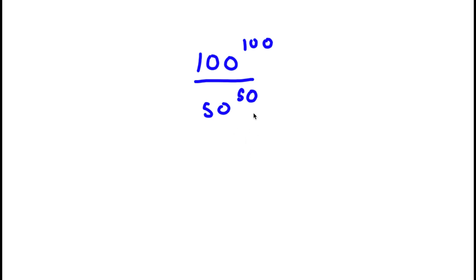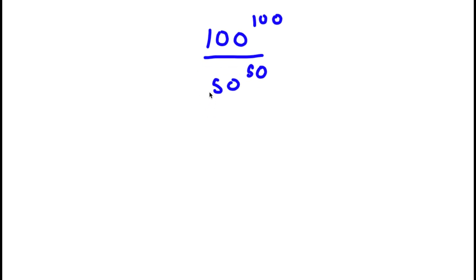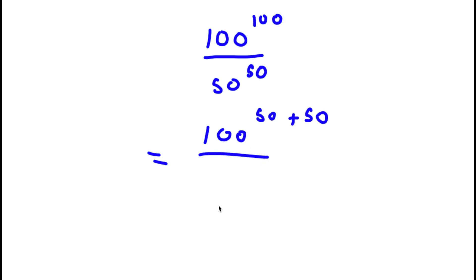In this problem, I have 100 to the power of 100 over 50 to the power of 50. Now, 100 is the same thing as 50 plus 50, so I'm going to rewrite this as 100 to the power of 50 plus 50, and I have this over 50 to the power of 50.